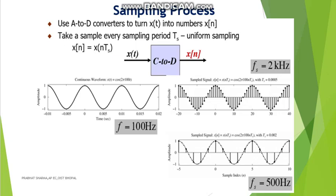In the sampling process, we convert an analog signal into a digital signal using A to D converters. For example, this analog signal has a frequency of 100 kilohertz. The sampled signals are converted into discrete signals. Here we are using a sampling frequency of 2 kilohertz, and in another case, a sampling frequency of 500 hertz. The sampling frequency must always be greater than the message frequency.